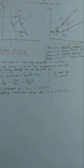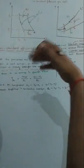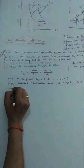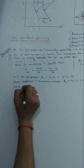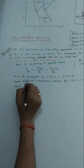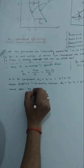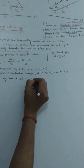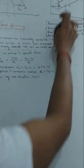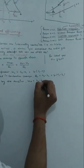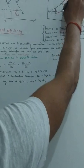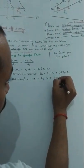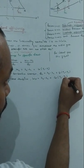Process 3 to 4 occurs in the turbine, where we get work output. The work done by the turbine is W_T = H3 - H4, representing the expansion of gas, which equals Cp(T3 - T4).